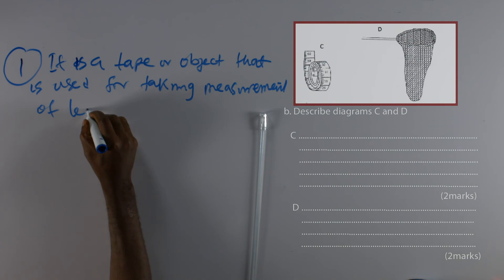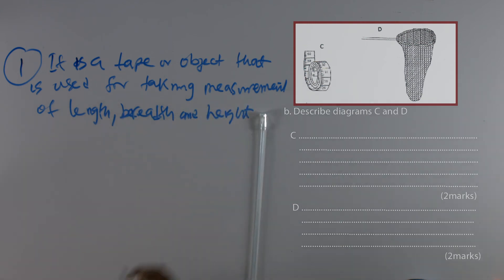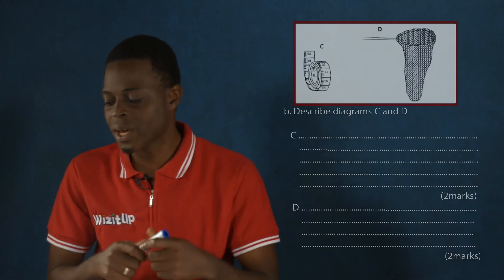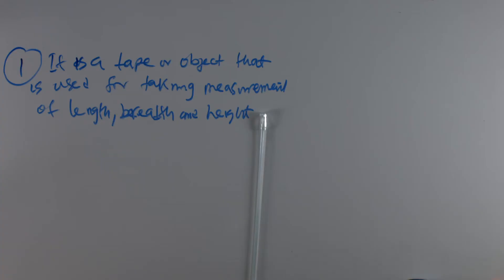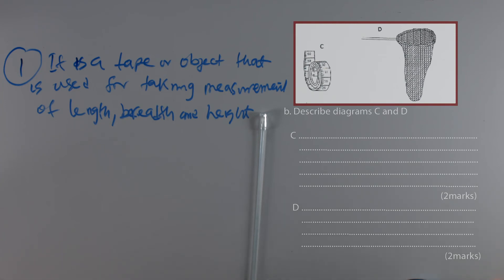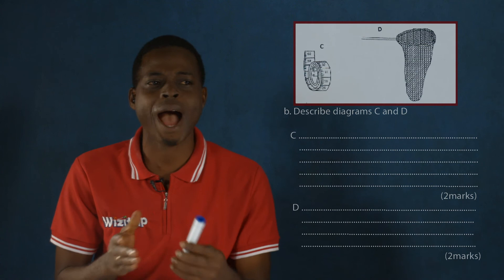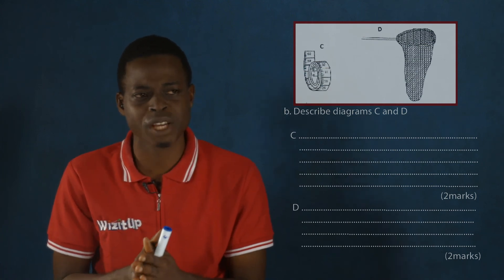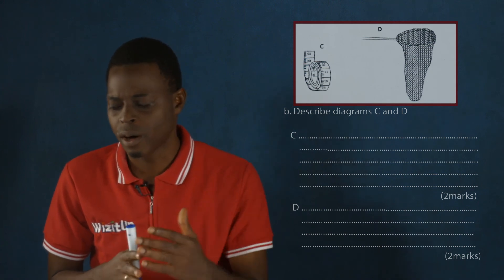So the first thing we can say about it is that it is a tape or object that is used for taking measurement of length, breadth, and height. Now we can also add some other basic information. Sometimes it is made from rubber, plastic, linen, and steel. And again, sometimes it is calibrated using metric unit or imperial unit. It is also used to measure around corners or angles that are very difficult to measure. So those are some other things that we need to know about the tape rule or the measuring tape.